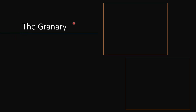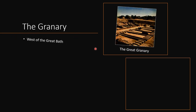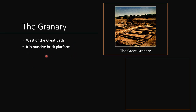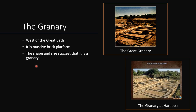Next is the granary. The granary was to the west of the Great Bath, and this is how it looked. It is a massive brick platform. The shape and size of this structure suggests that it may have been used as a granary.